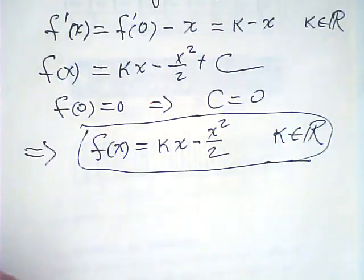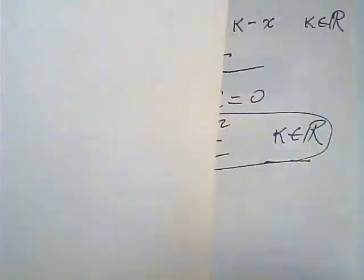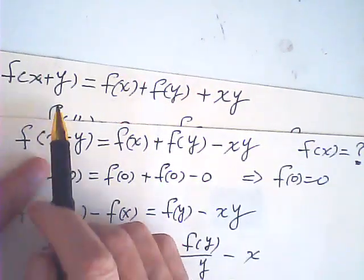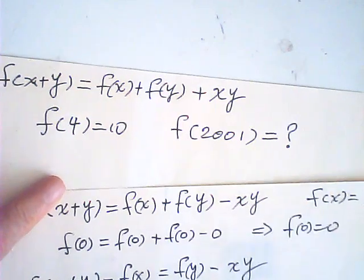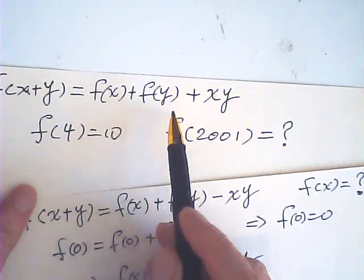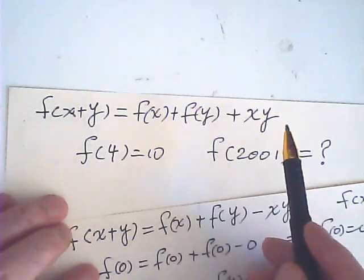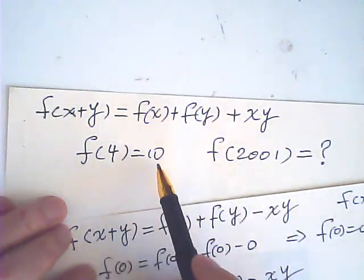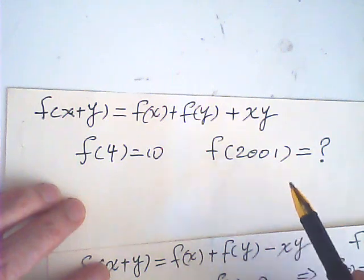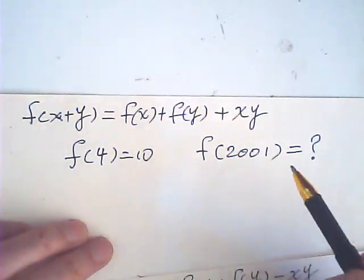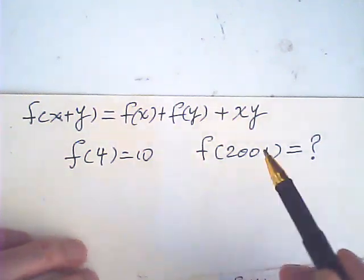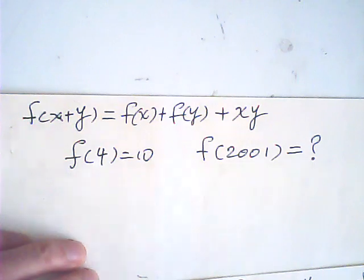Now, I saw another question on YouTube, which is similar. This one. So, f of x is f of x plus f of y plus xy, given f of four is 10. Find f of 2001. This is a 2001 Olympiad in Europe. So, that's why we have 2001.